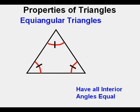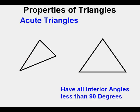Any triangle having each interior angle less than 90 degrees is called an acute triangle. Since equiangular triangles have each angle less than 90 degrees in measure, they are also classified as acute triangles.